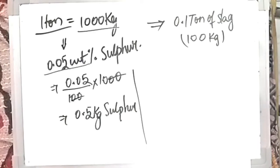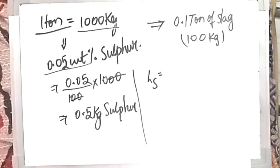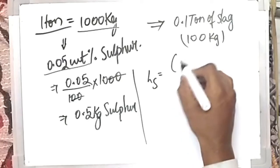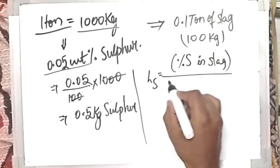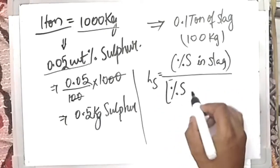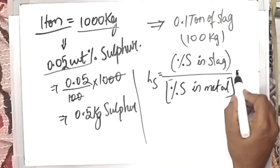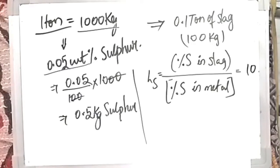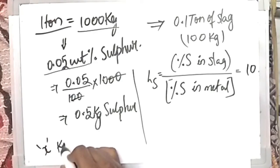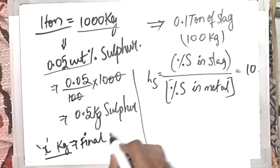The distribution ratio, represented as L_S for sulfur, is the weight percentage of sulfur in the slag divided by the weight percentage of sulfur in the metal — where the denominator is the final sulfur content. This value is given as 10. Using this, we have to calculate the final sulfur content present in the liquid steel.